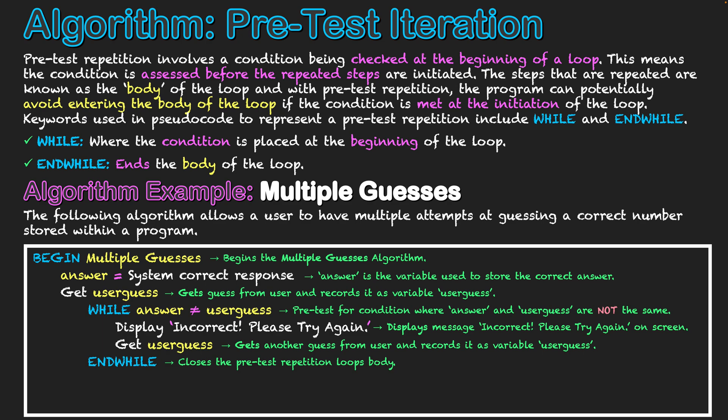This is pre-test iteration, which means there is the chance the user will guess the number straight away and completely avoid the loop. So if they guess two straight away, it's going to skip the whole WHILE section and jump straight to display correct. Correct will come straight on screen. That is what pre-test iteration is all about — in this situation, we can bypass the loop and avoid those steps completely.